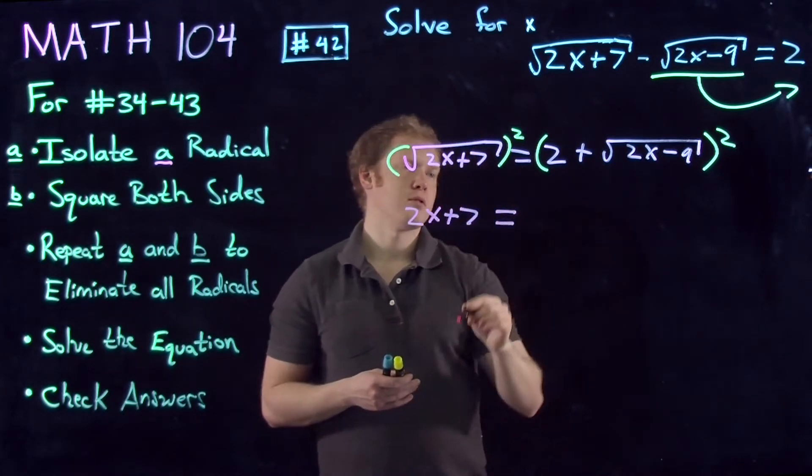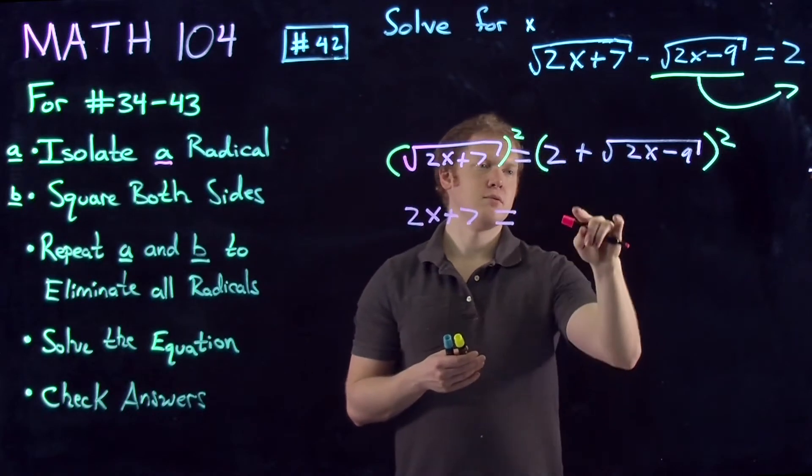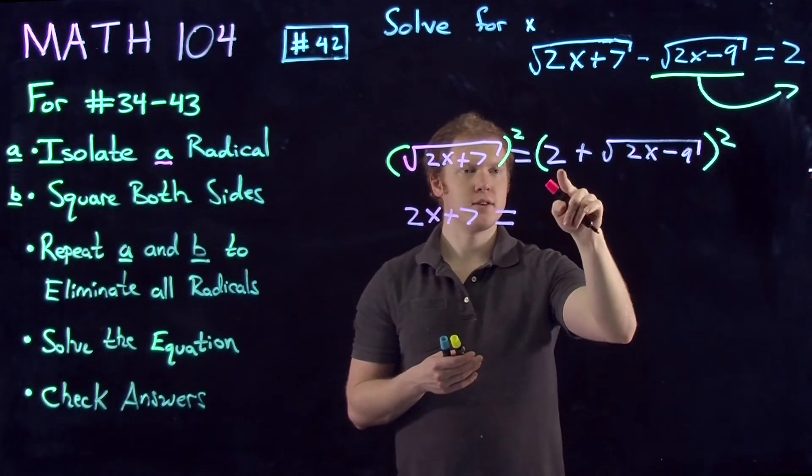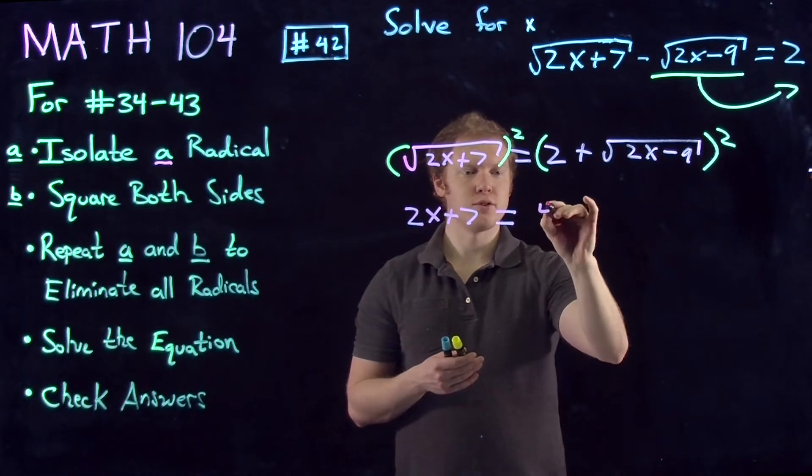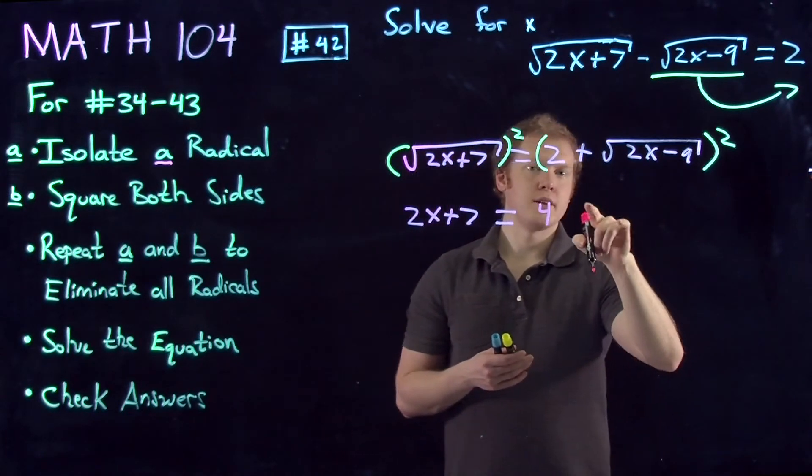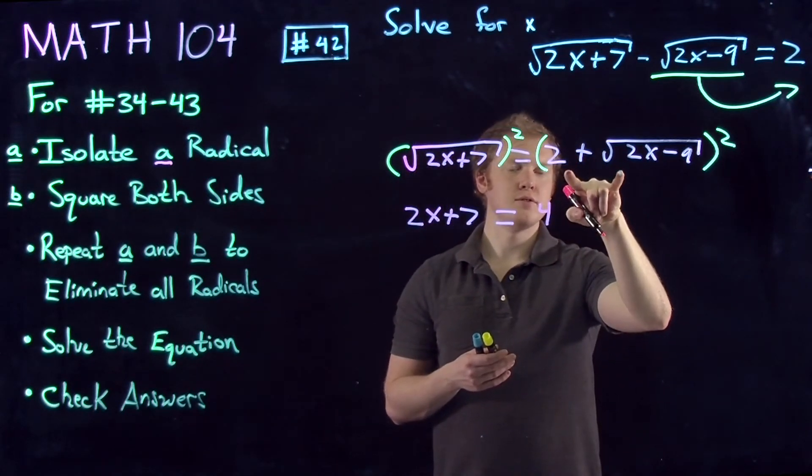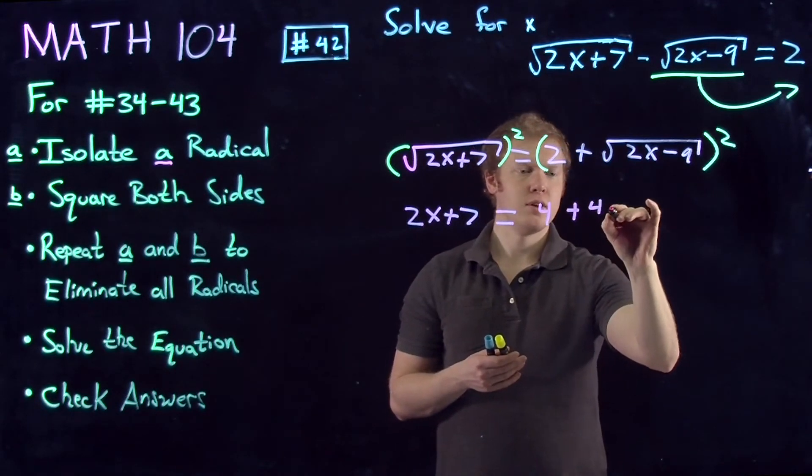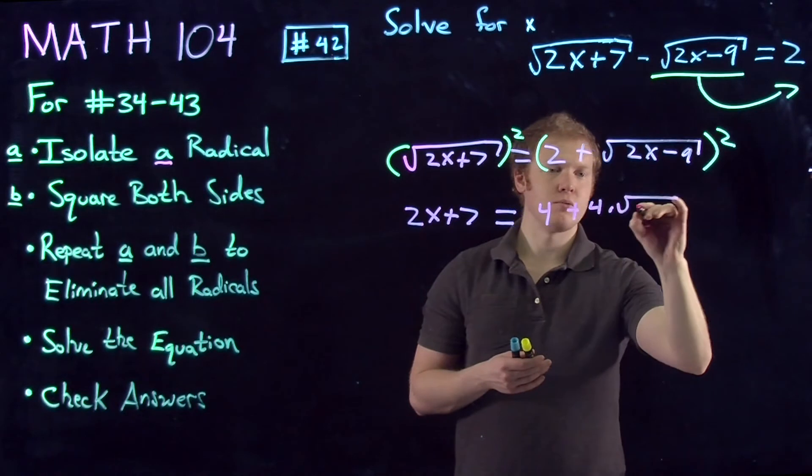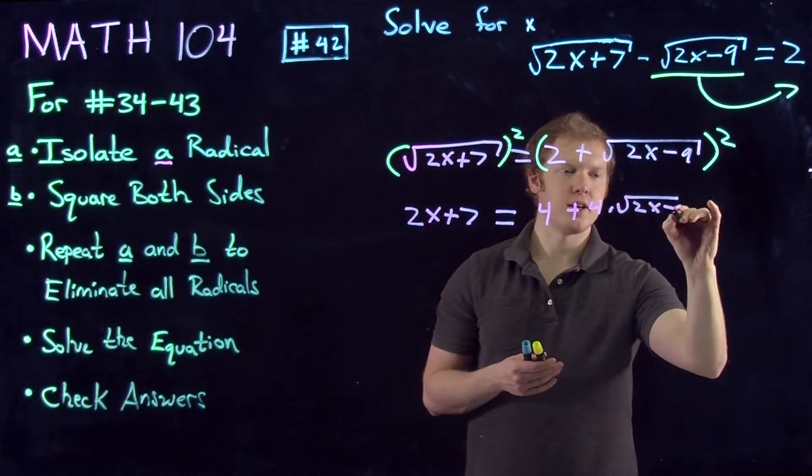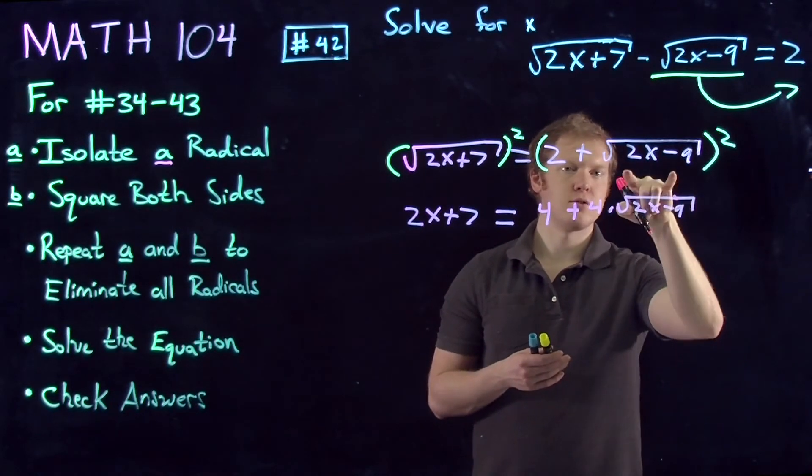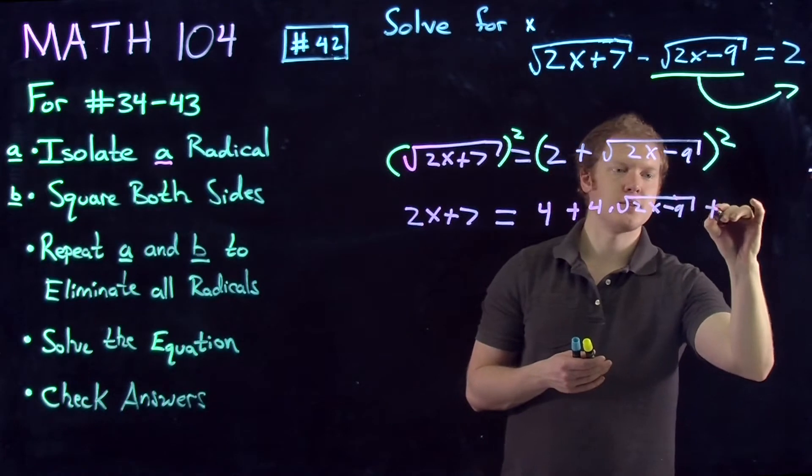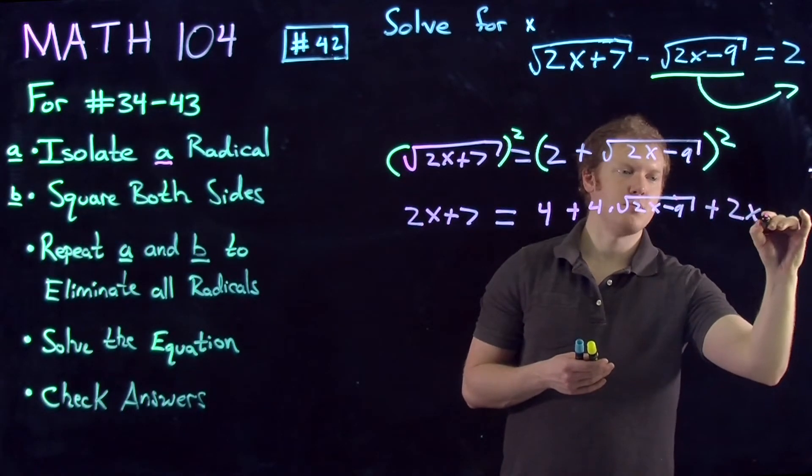For the right-hand side, we'll have to use the binomial expansion. We will get the first term squared, which is 4. Then we get the product of these two terms times 2, which gives us 4 times the square root of 2x minus 9. And then the second term squared, which gives us 2x minus 9.